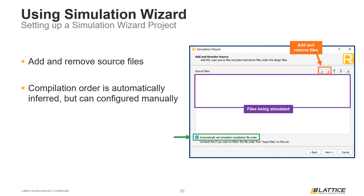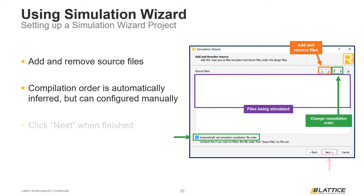If the Automatically Set Simulation Compilation File Order option is disabled, users will have to manually specify the order for the files in their simulation using the arrow icons at the top of the screen. Once users have finished adding the simulation files for their project, they should click the Next button to continue.